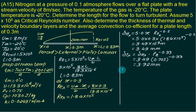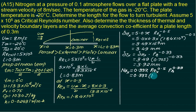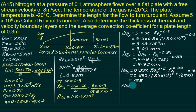To find the average heat transfer coefficient over the 0.3 m plate, we use the local Nusselt number correlation from the laminar table: Nu_x = 0.332 × Rex^(0.5) × Pr^(0.33). Substituting Rex = 1.84 × 10⁵ and Pr = 0.75, the local Nusselt number is 125.